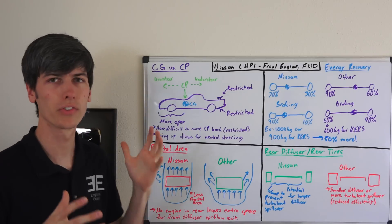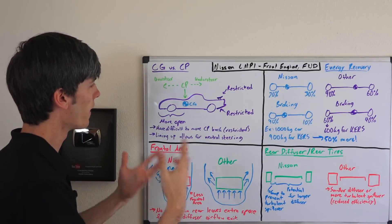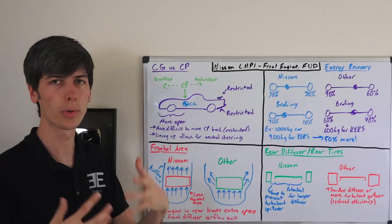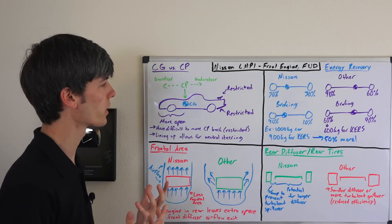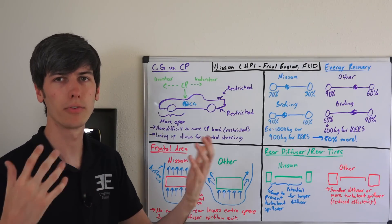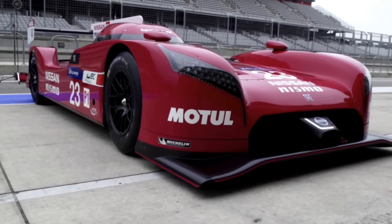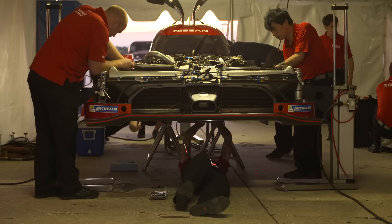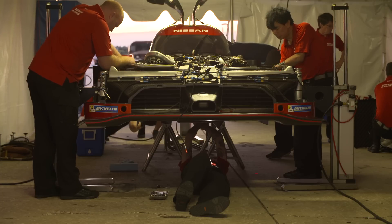So starting with the first one, center of gravity versus center of pressure. This comes down to the rule books. Because basically the rear wing and the rear diffuser are very much so restricted. So everyone's going to be running something very similar. Whereas the front of the car is much more open for aerodynamic changes.